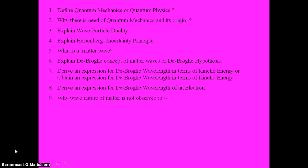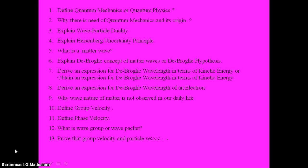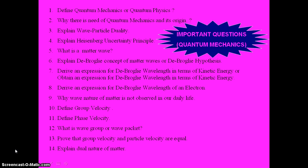Why is the wave nature of matter not observed in our daily life — five or six marks. Define group velocity — two marks. Define phase velocity — two marks. What is a wave group or wave packet — two marks. Prove that group velocity and particle velocity are equal — three or four marks. Explain the dual nature of matter — three marks.